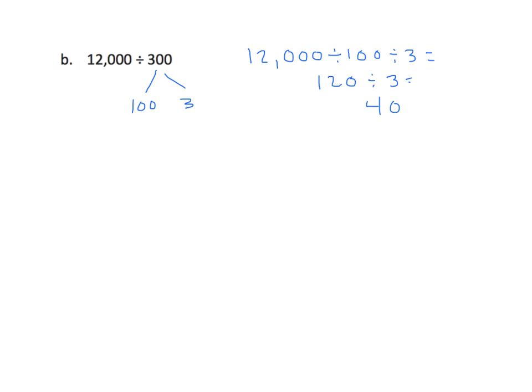That's basically what they want you to do, is to take your, again, your dividend, or divisor rather, decompose it into, we'll call it take out the hundreds, and then perform this as a two-step. So instead of just dividing by 300, we're going to divide by 100, then 3. We get the same answer.